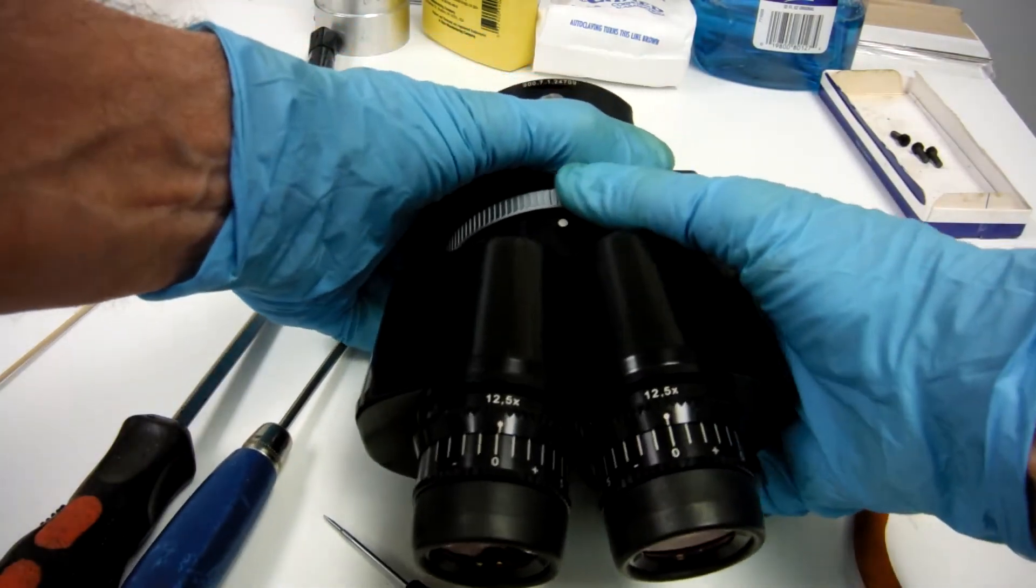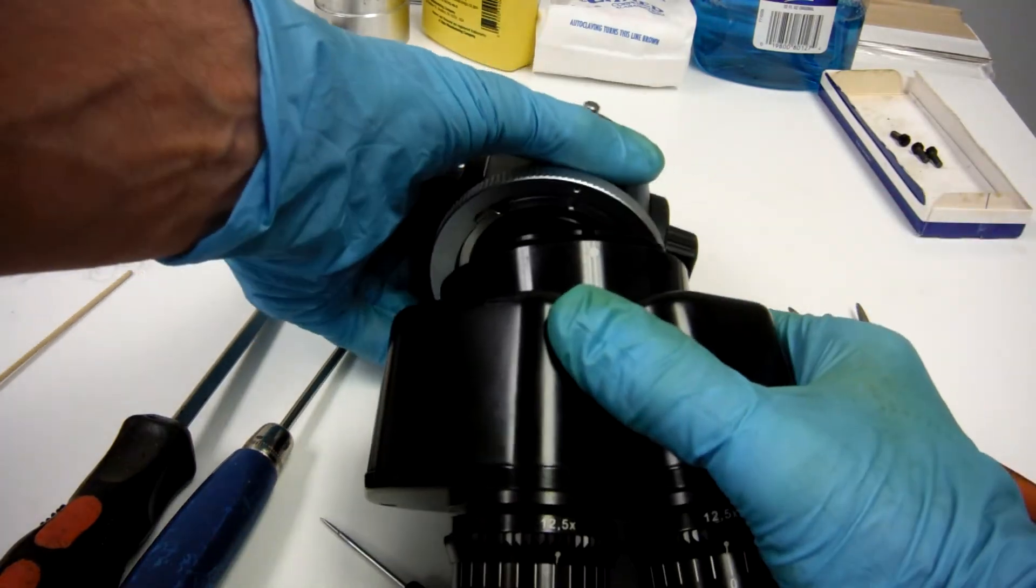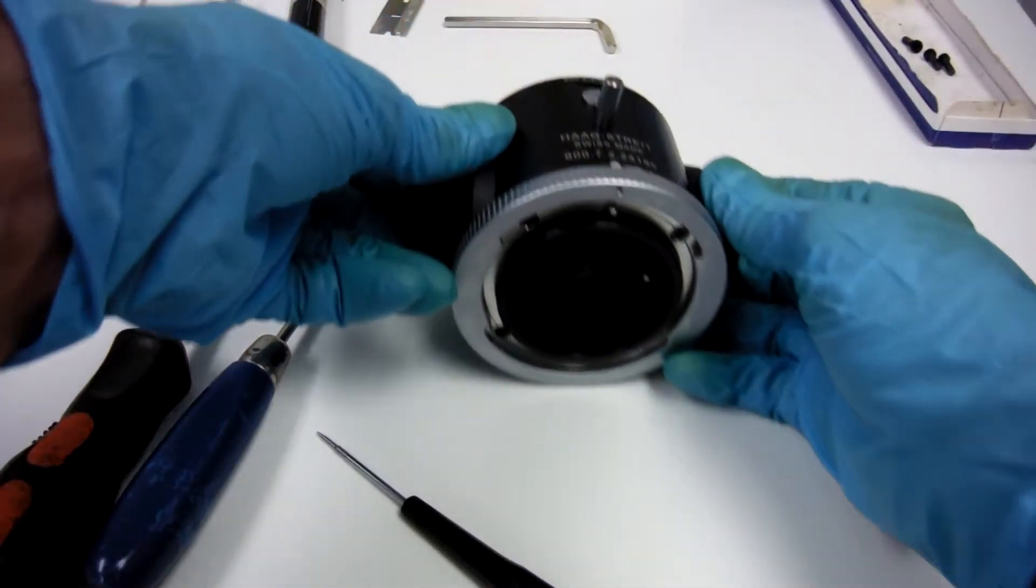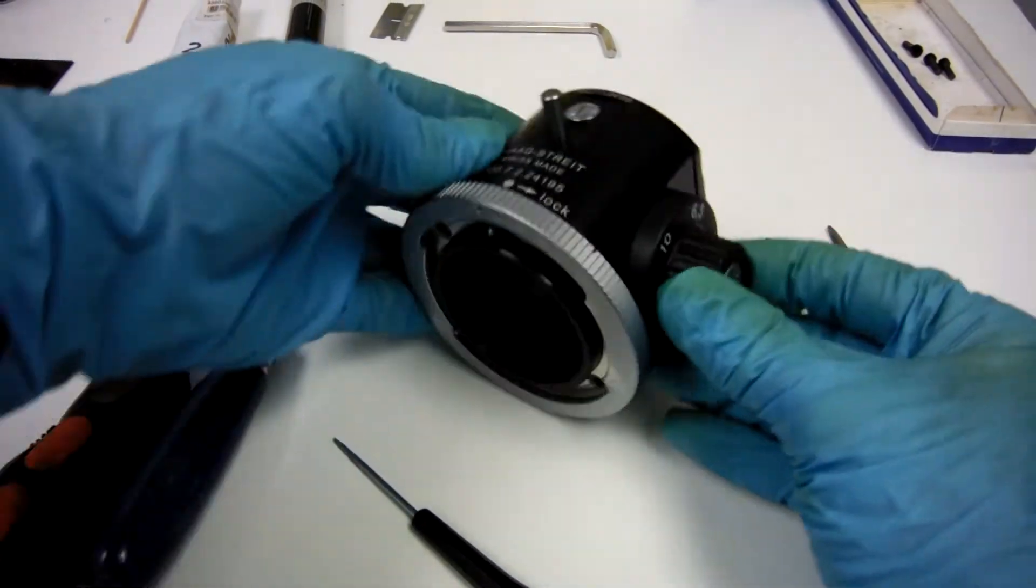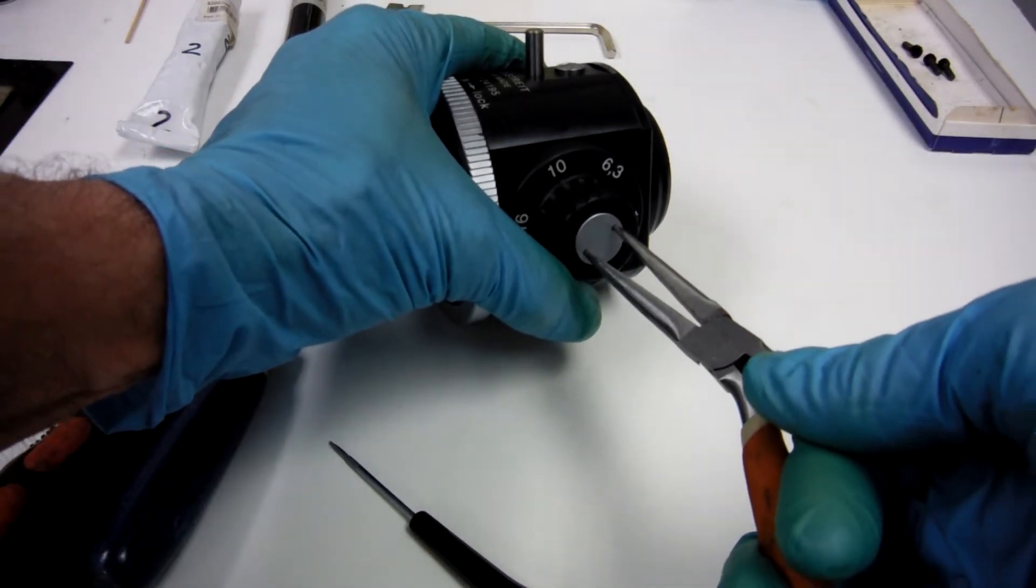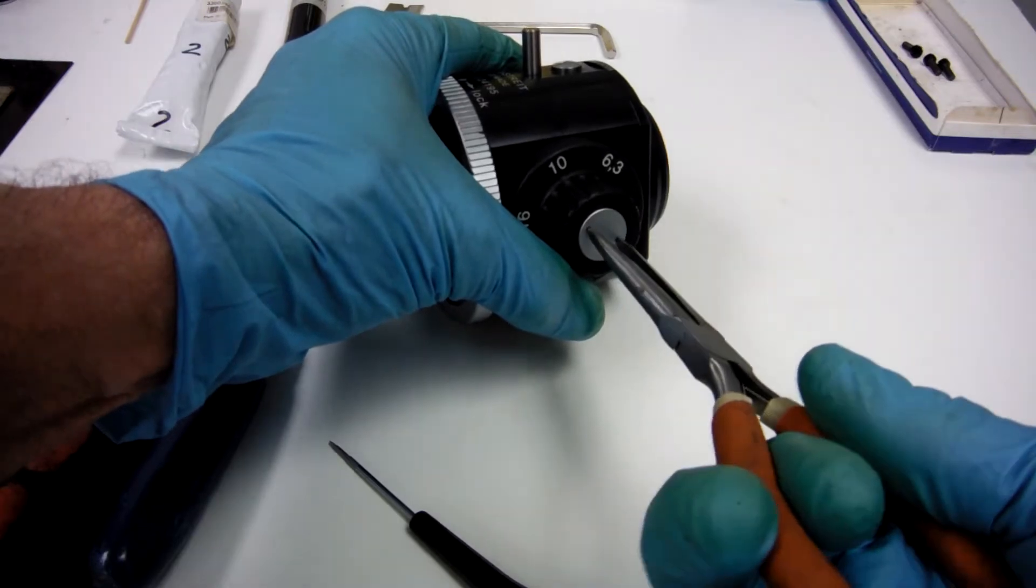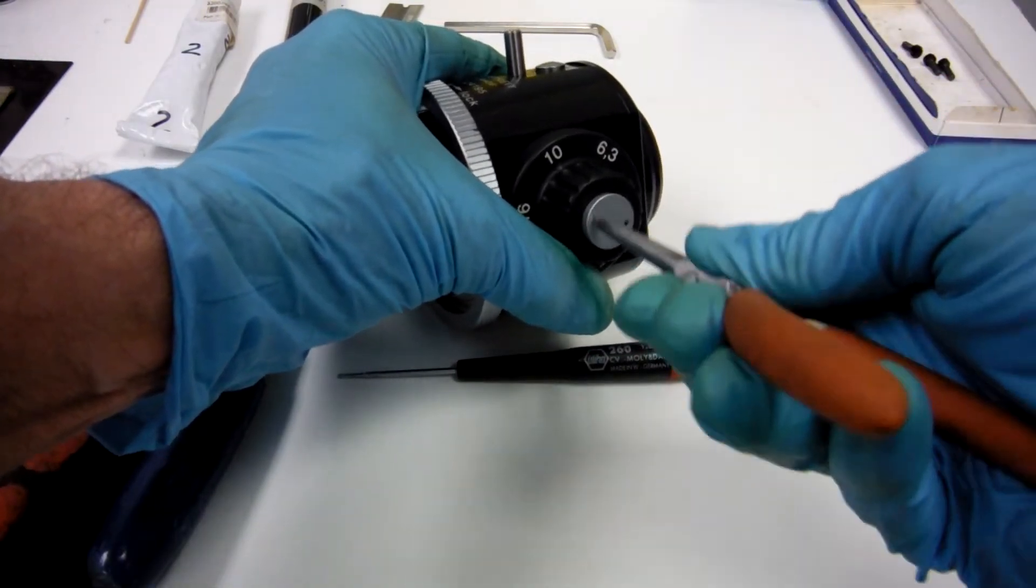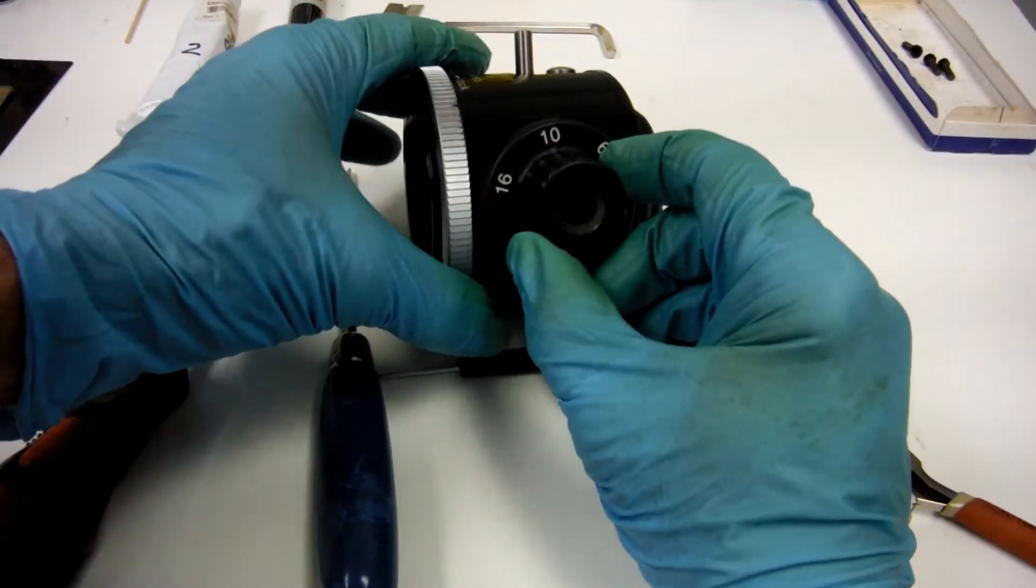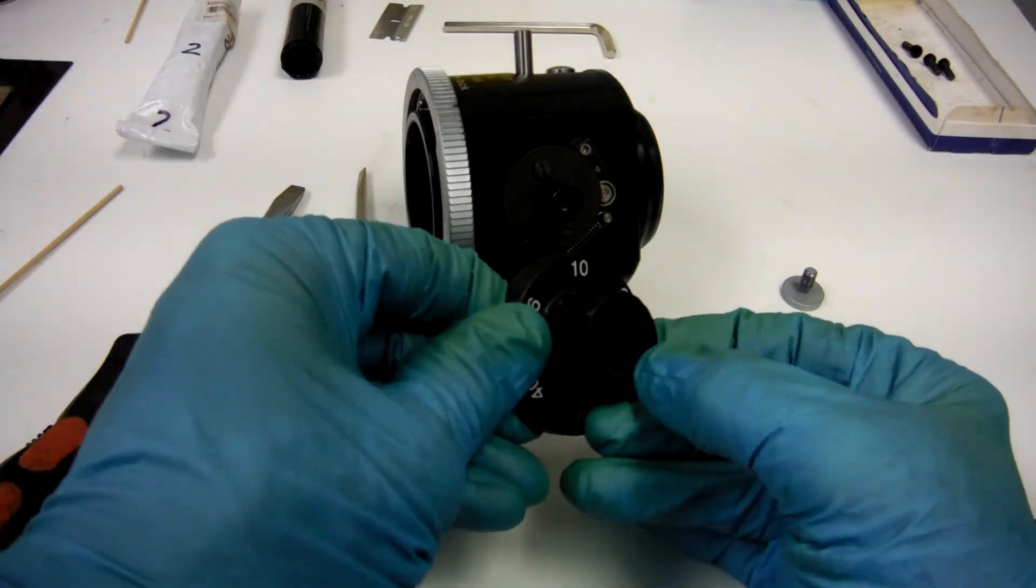First thing we're going to do is take off the binoculars. Put those aside. We will loosen these nuts on the knobs with needle nose. Behind that nut, there's a waffle washer. It acts like a spring.